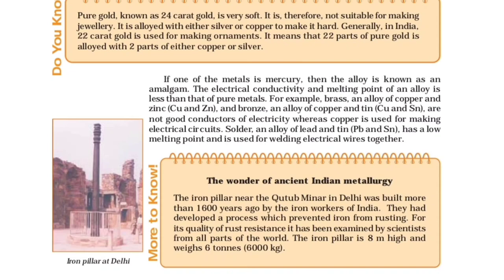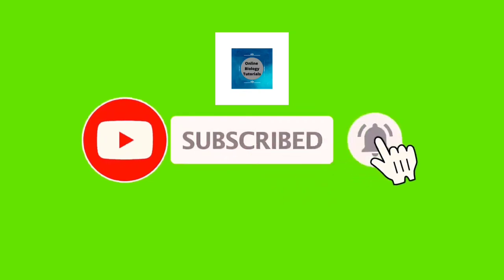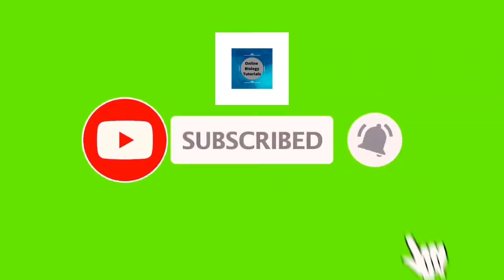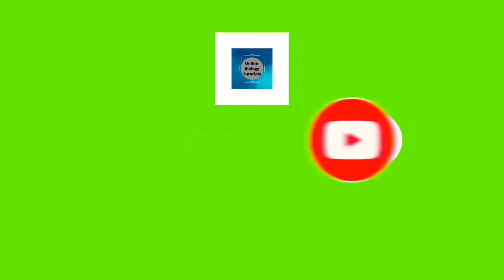Do you know? The iron pillar near the Qutab Minar in Delhi was built more than 1,600 years ago by the iron workers of India, who developed a process that prevented iron from rusting. The iron pillar is 8 metres high and weighs 6 tons (6,000 kilograms). Such a lengthy chapter, but we have done it! How did you find this video? Please tell us in the comments section. Please motivate us by clicking like and subscribe for more videos like this. Thanks!